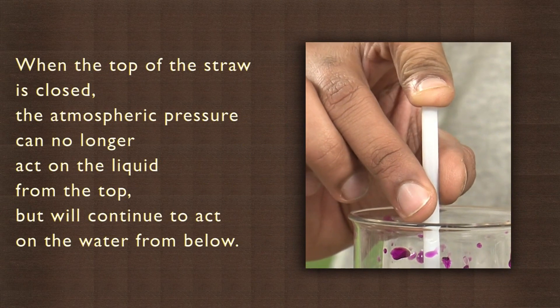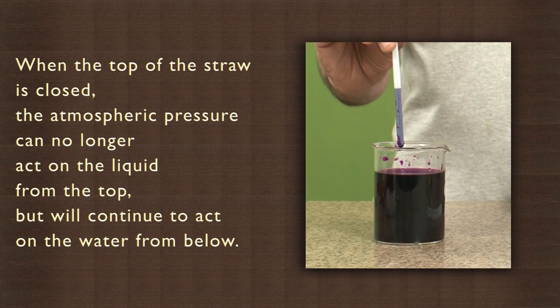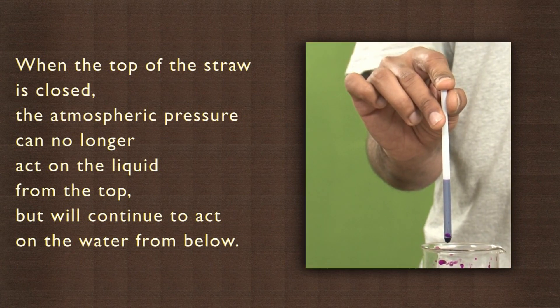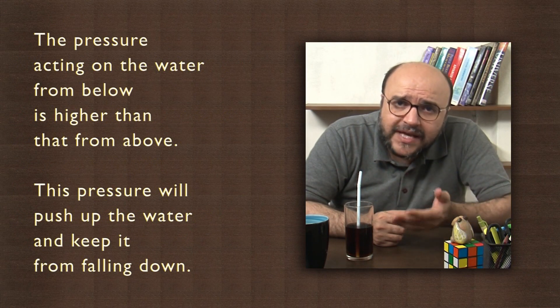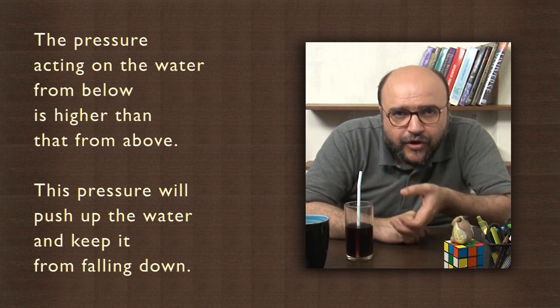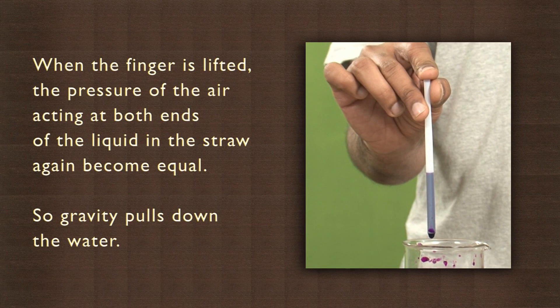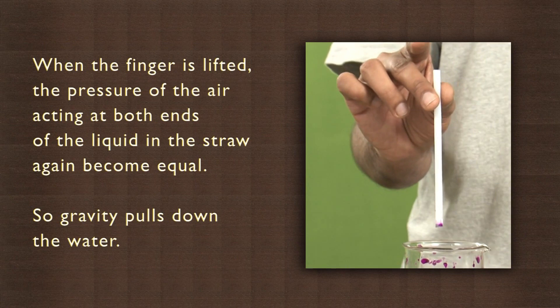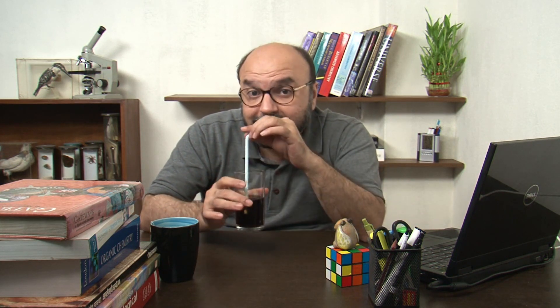When the top of the straw is closed, the atmospheric pressure can no longer act on the liquid from the top, but will continue to act on the water from below. The pressure acting from below is higher than that from above, which pushes up the water and keeps it from falling. When the finger is lifted, the pressure of air at both ends becomes equal, so gravity pulls the water down. When you suck the air out of the straw, the atmospheric pressure pushes the drink into your mouth.